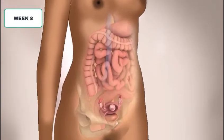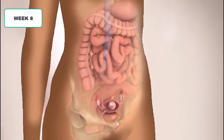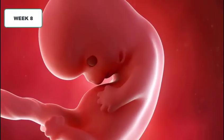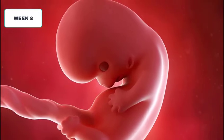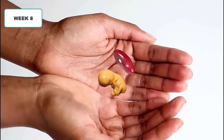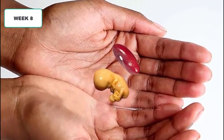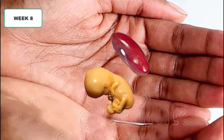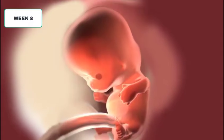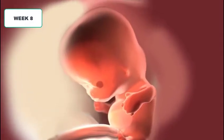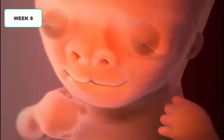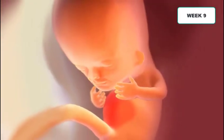At week eight the embryo is still growing and is now four times the size it was two weeks ago — now the size of a bean. A close look shows clearly differentiated tiny baby features: eyes, nose, ears, and hands are becoming more and more defined, and the heart is beating stronger.